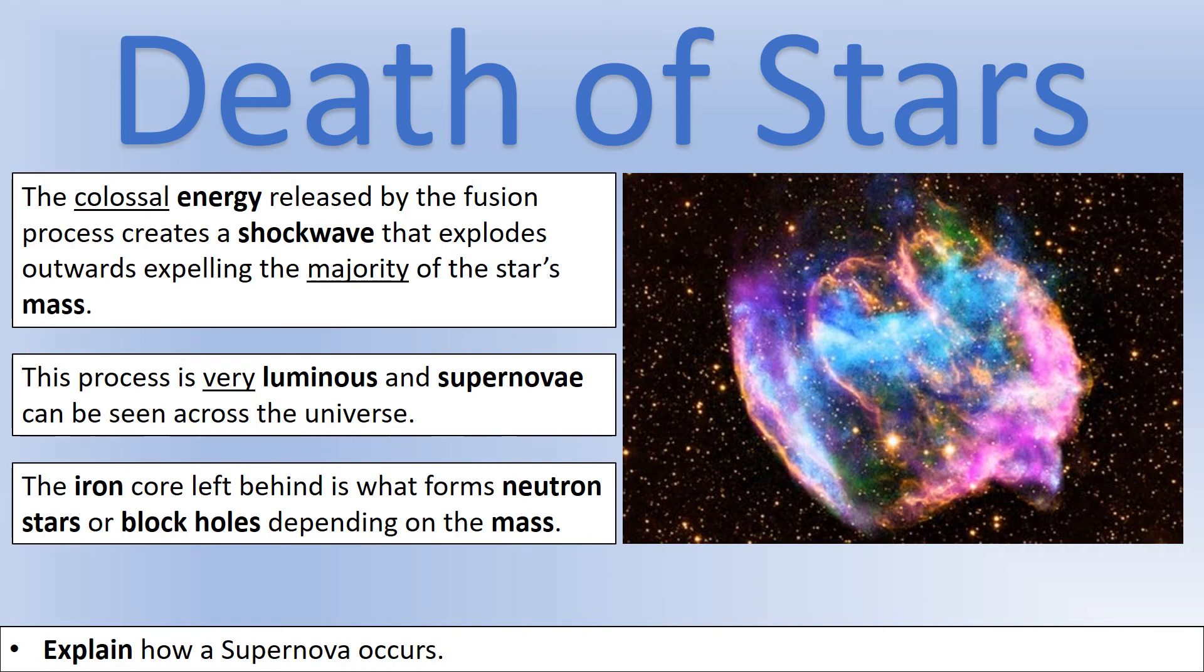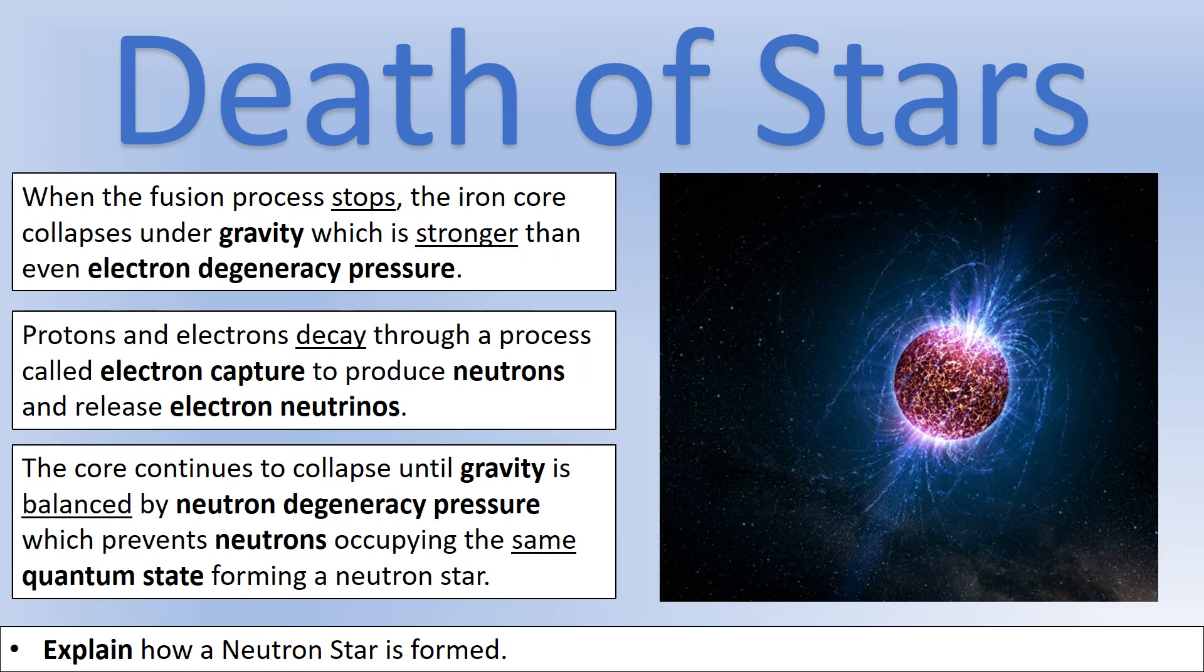So let's first look at a neutron star. So when we've got left with iron, the fusion process will essentially stop, because we can't fuse iron into other things. And when you look at the radioactivity part of the course, you'll actually understand why iron won't undergo further fusion. But because it's iron, the force of gravity is much stronger than it was in a white dwarf. So actually, the force of gravity is now greater than the electron degeneracy pressure.